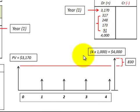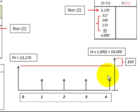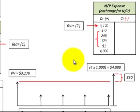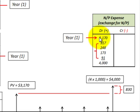Let's look at the cash flow diagram here. We have four equal payments at the end of each of the next four years, and then we would discount those payments back using the applicable interest rate to find the present value. We found the present value, and then in beginning year one, we record that present value — in this case, it was $3,170.